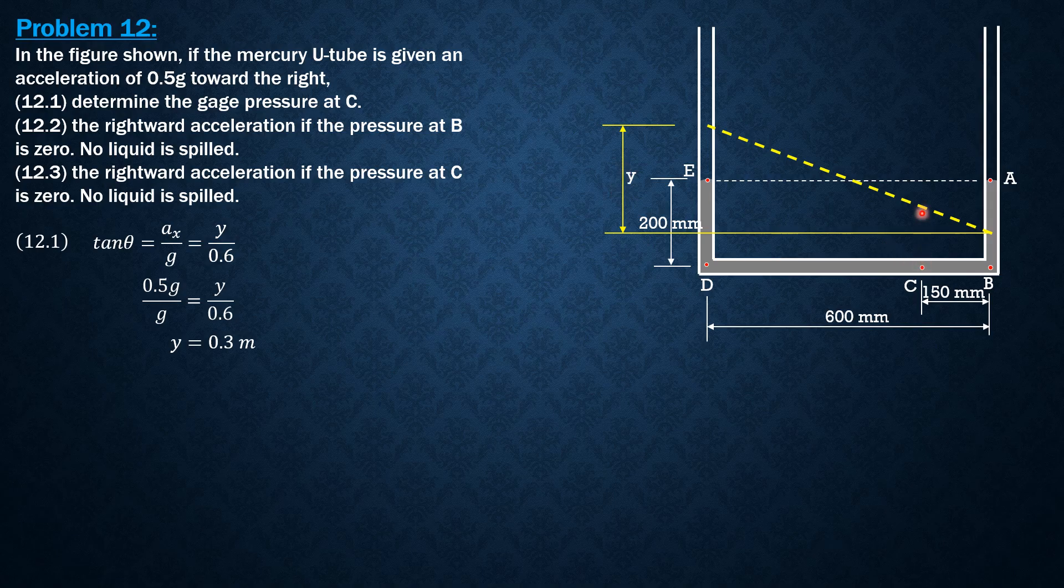Then the head over C would be this value here plus this value. We will call this value Y1, and this value here from this horizontal yellow line is equal to 50 mm or 0.05 meter because this lowers 150 mm. E will rise 150 to make it 300 mm or 0.3 meter. Take note, this is 50 mm or 0.05 as shown in the figure. The head over C would be Y1 plus 0.05. That's the depth from 0.0 pressure to C. Solving for Y1 by similar triangles, Y1 as to 150 mm equals 0.3, this is Y 0.3, as to 600 mm. Y1 is equal to 0.075 meter.